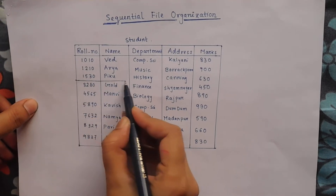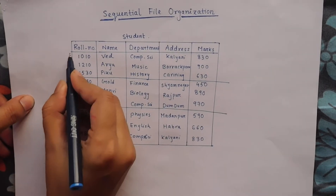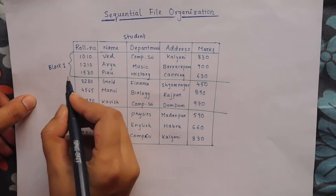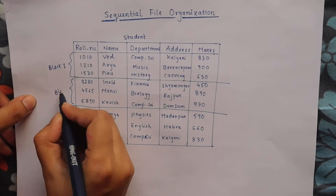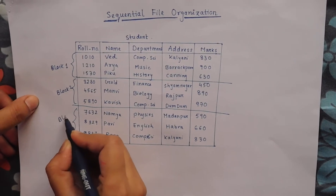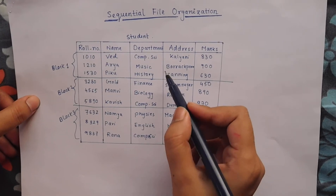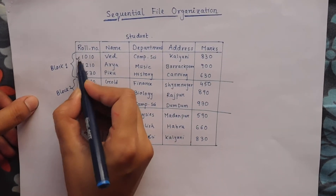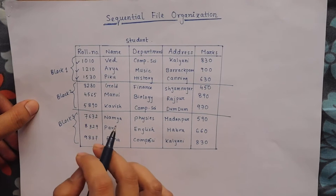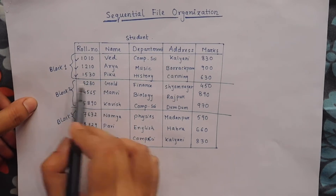The file is logically partitioned into some fixed-length storage units called blocks. Suppose we partition this into three blocks: block 1, block 2, and block 3. Each block contains a number of records — suppose this is one record, second record, third record, and similarly three records in each block. So the file is partitioned into blocks and each block contains records.